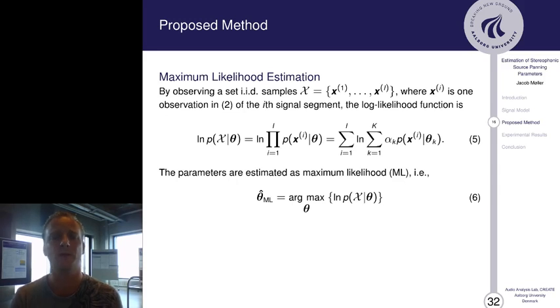Once that is done, we observe i.i.d. samples, independent, identically distributed, where x_i is one observation in equation 2 of the i-th signal segment, and the log-likelihood function is then shown in equation 5. Such parameters are estimated as a maximum likelihood, and the GMM is implemented as an EM algorithm.